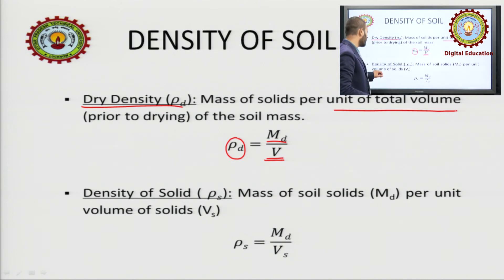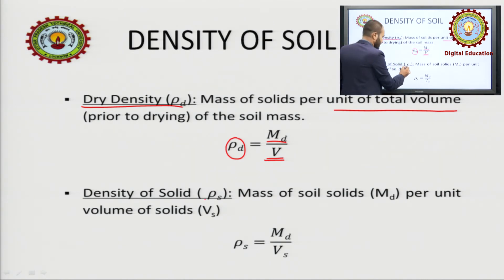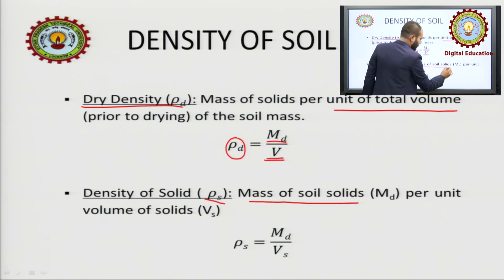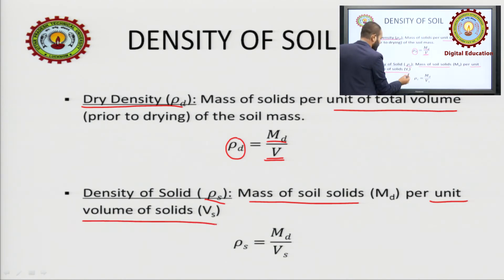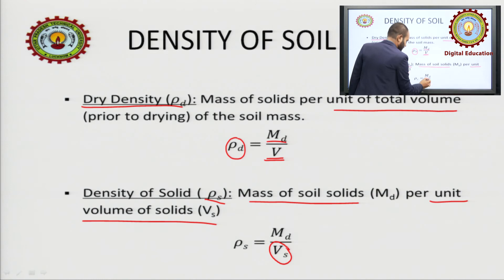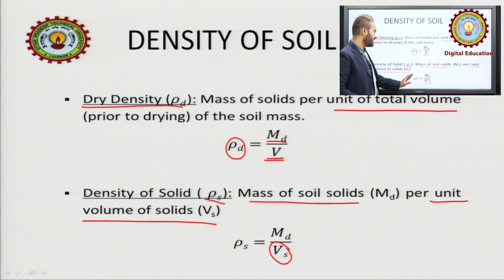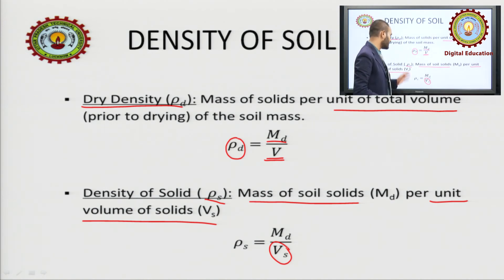The next parameter is density of solids, represented by rho_s. It is nearly the same as dry density — the mass of soil solids md is in the numerator — but it is per unit volume of soil solids only, that is Vs. So rho_d equals md by V, and density of solids equals md by Vs.